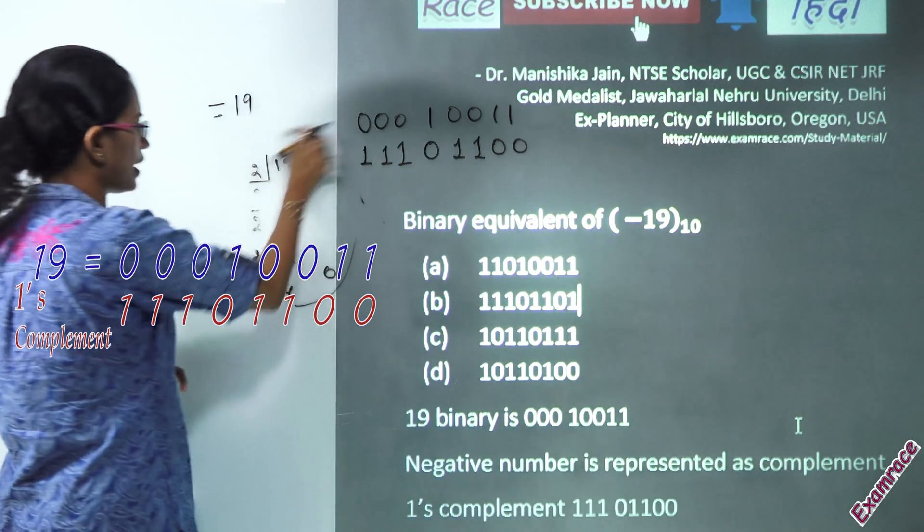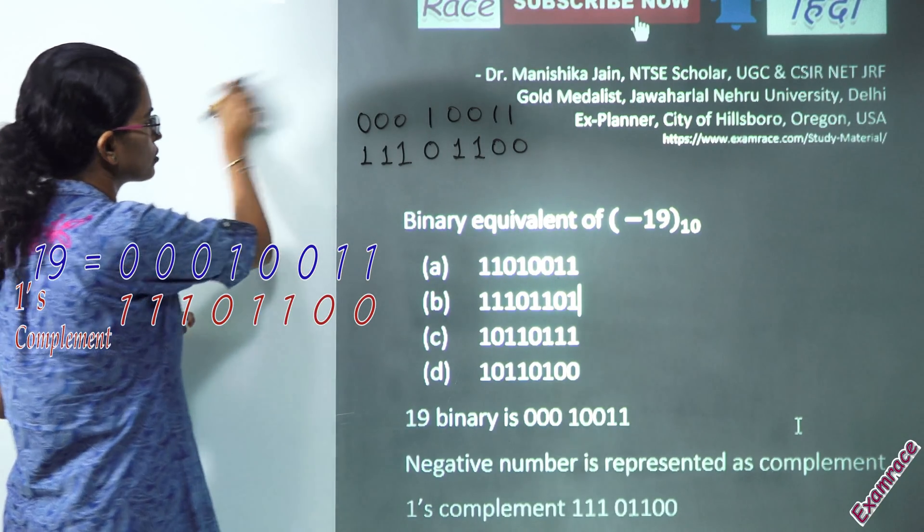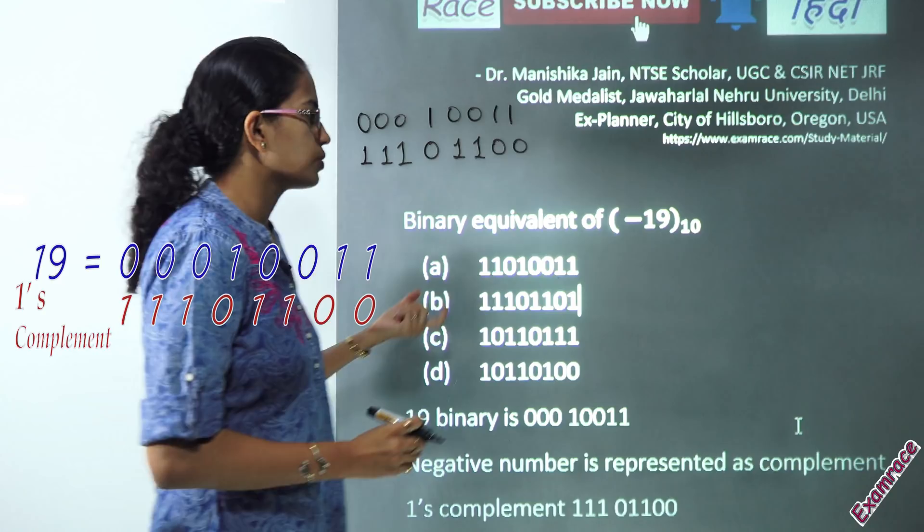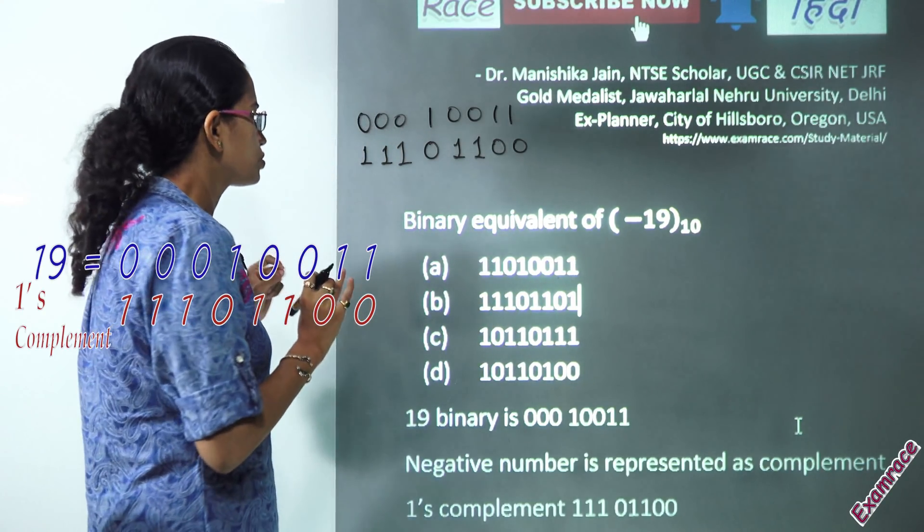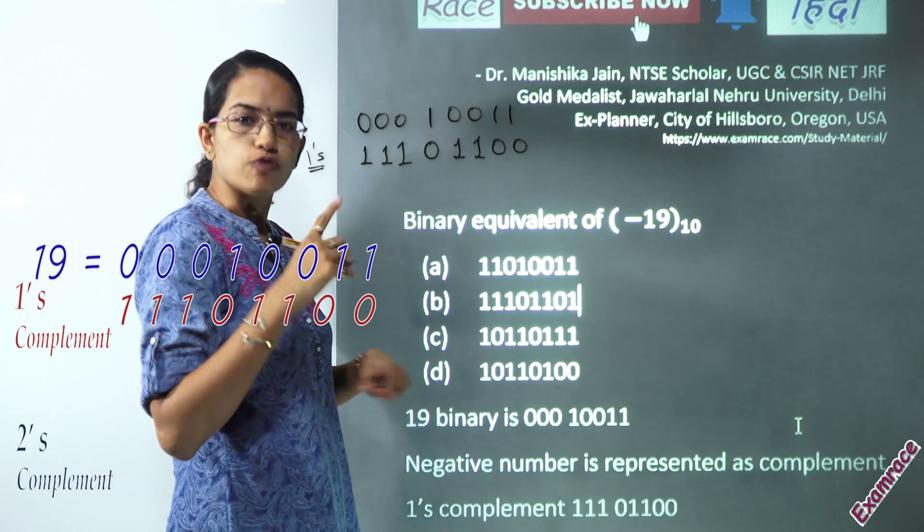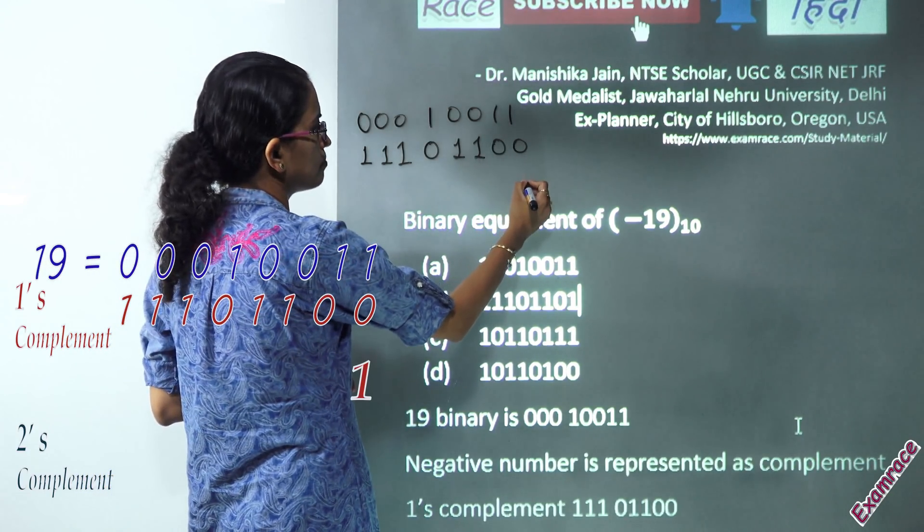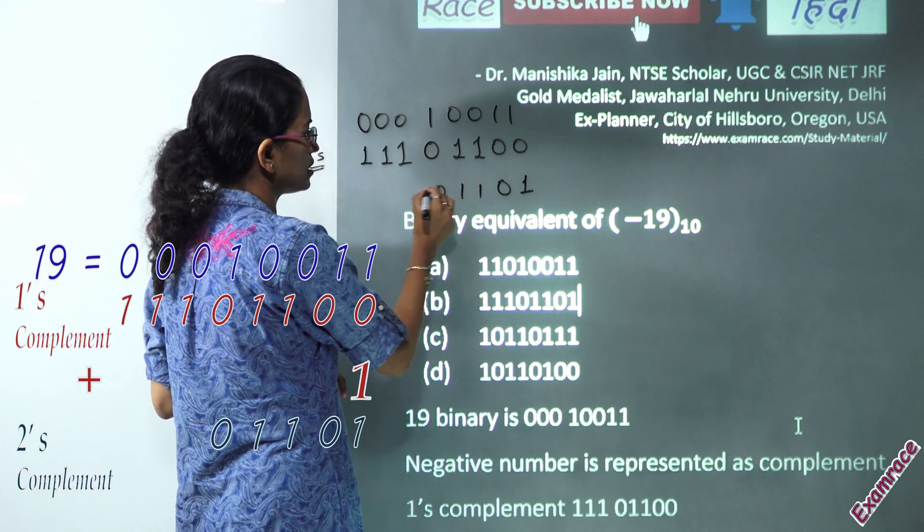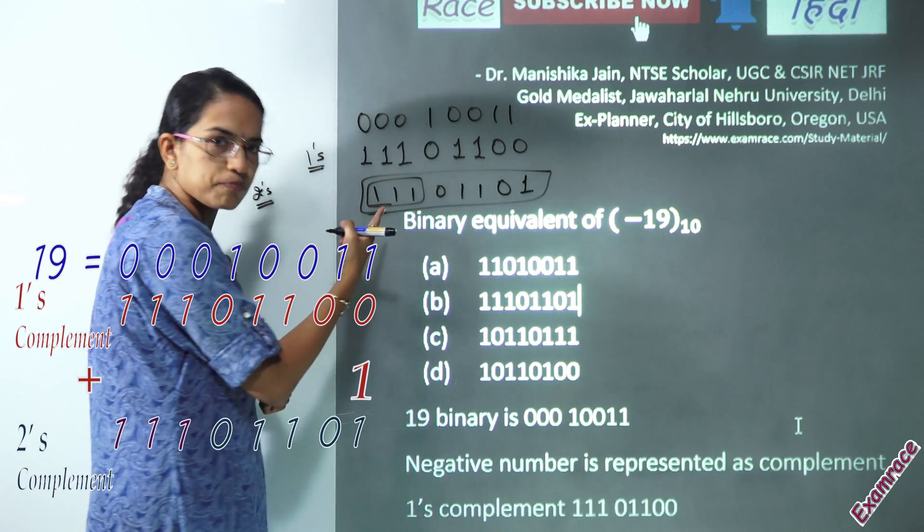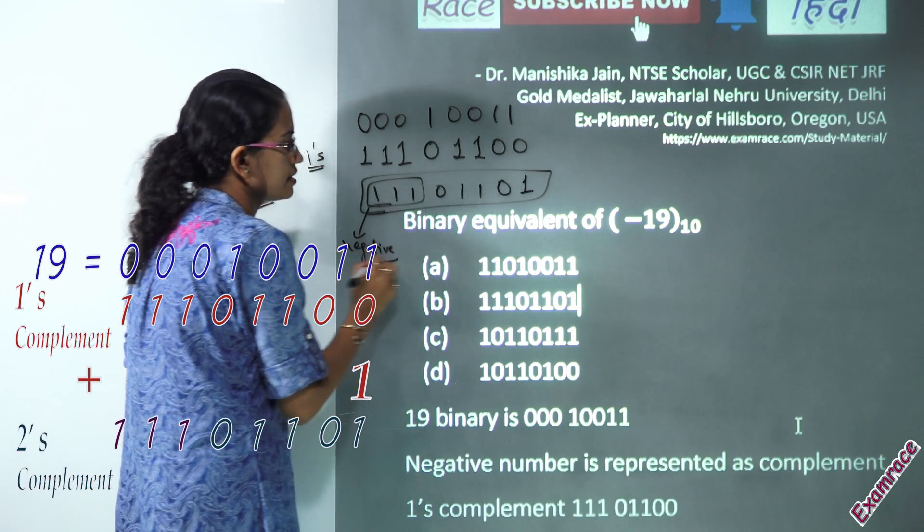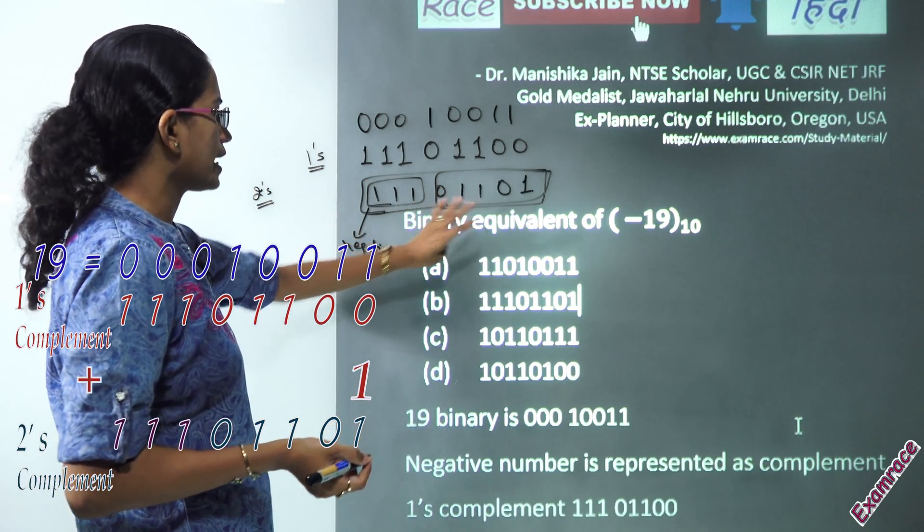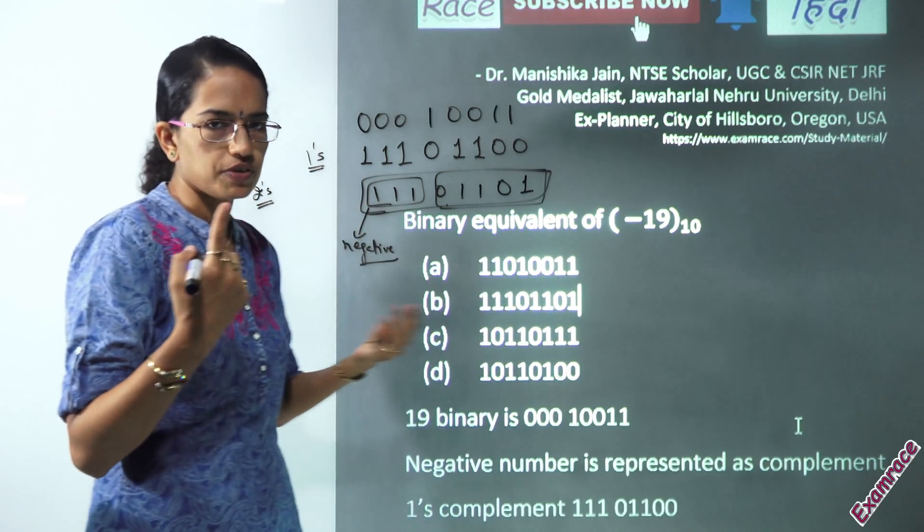Now, what I have to find out is 2s complement because I'm given that I have to find out a binary equivalent for minus 19. Since nothing is given whether it's 1s complement or 2s complement, what I need to do is I'll have to find out 2s complement. So, finding 2s complement is pretty simple. What you have found out in the 1s complement, you would simply add 1 to it. So, when I say you are adding 1 to it, what would it become? So, it would become 1, 0, 1, 1, 0, 1, 1, 1 and that would be my answer. So, here all these 3 1s would be denoting the negative sign and the remaining number would denote the number itself. So, that's how we find out the negative binary equivalent of a negative number.